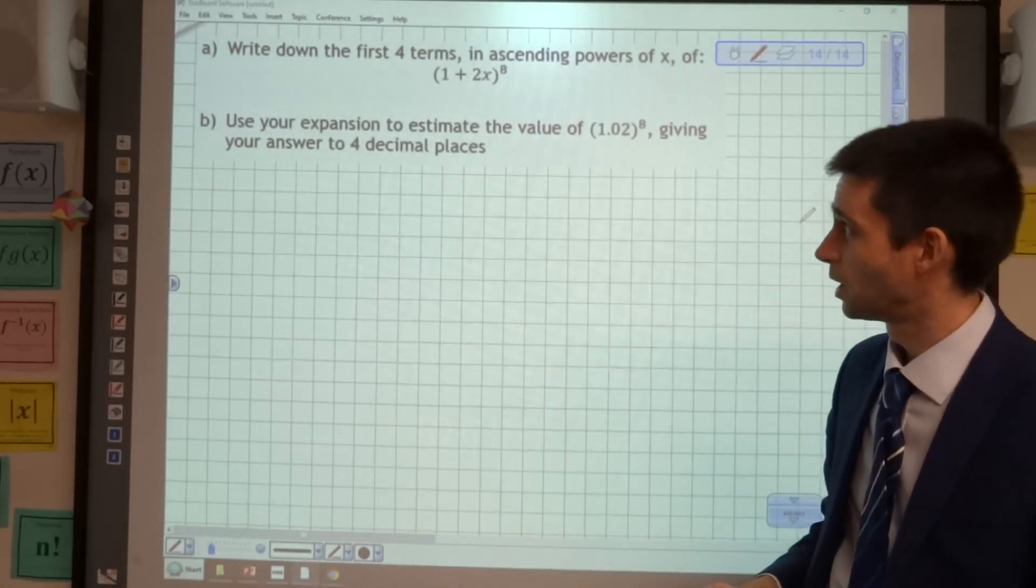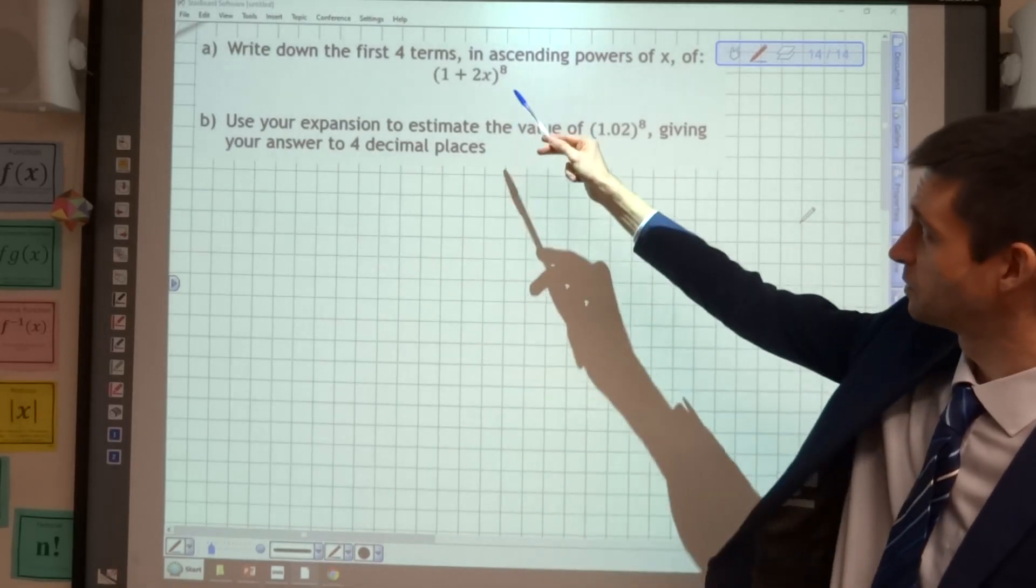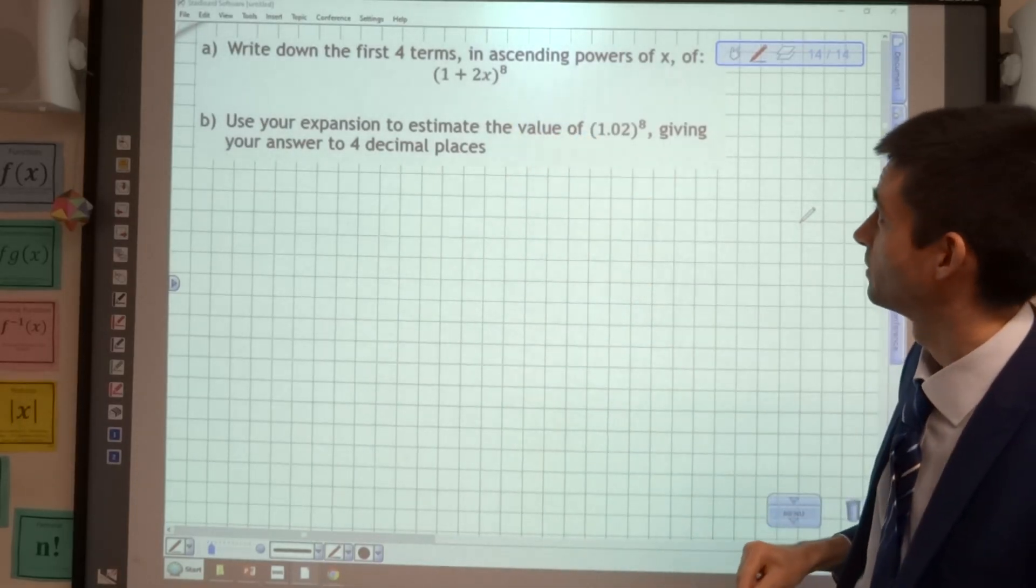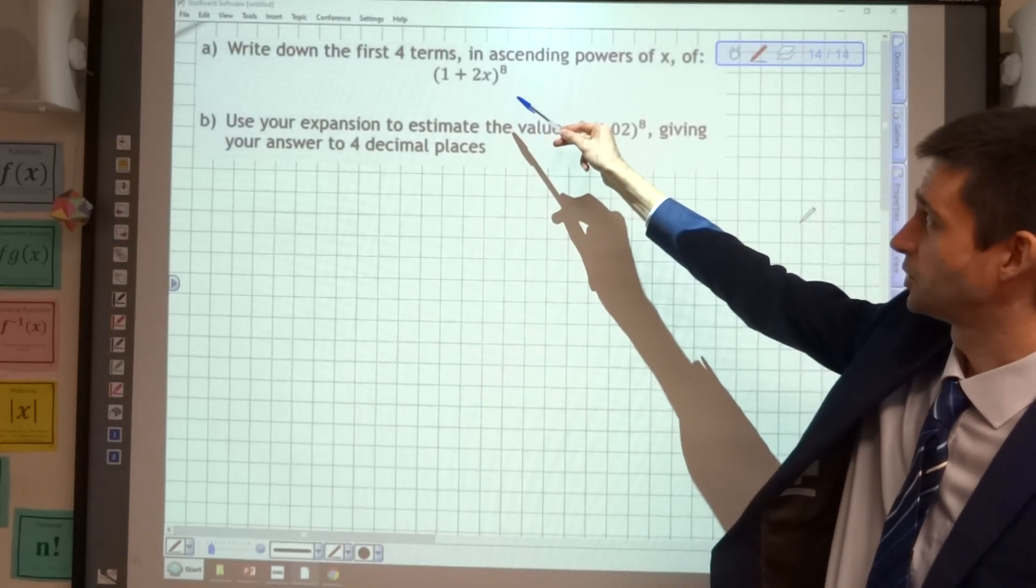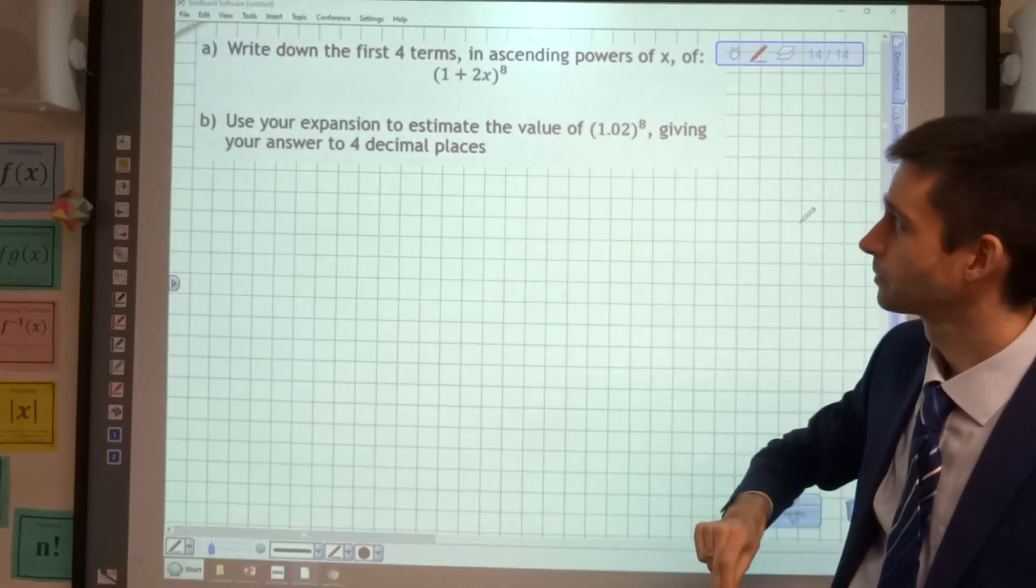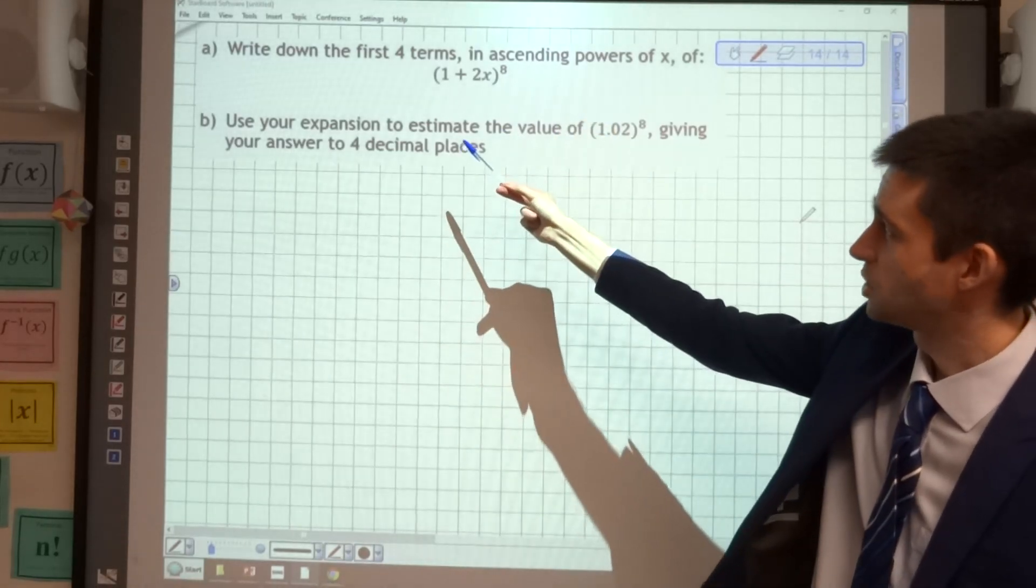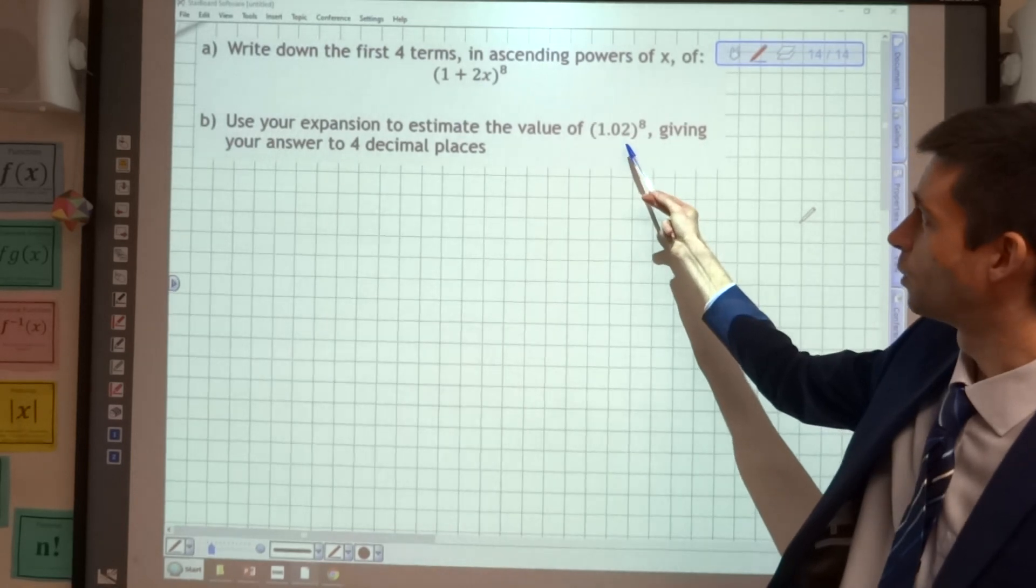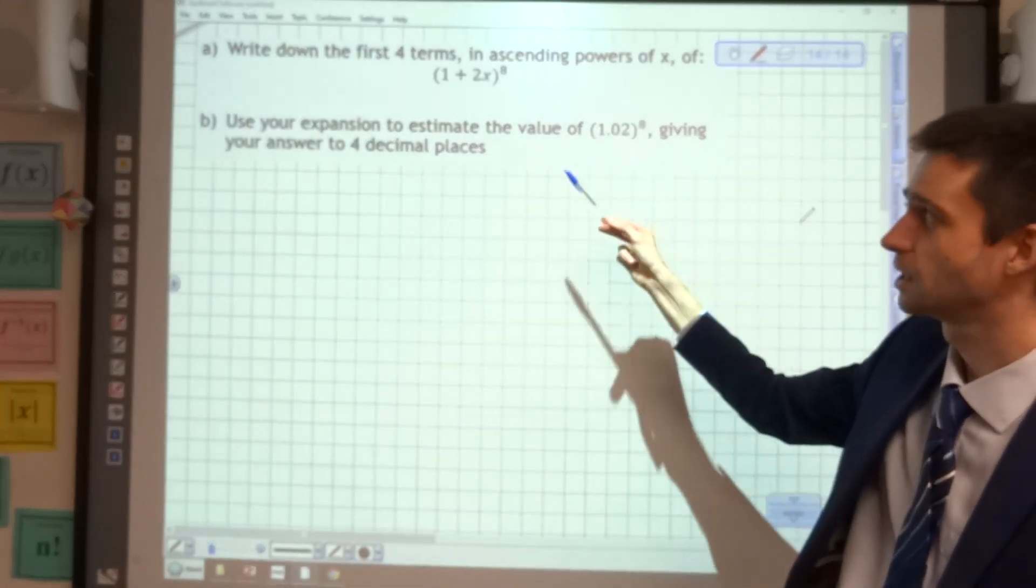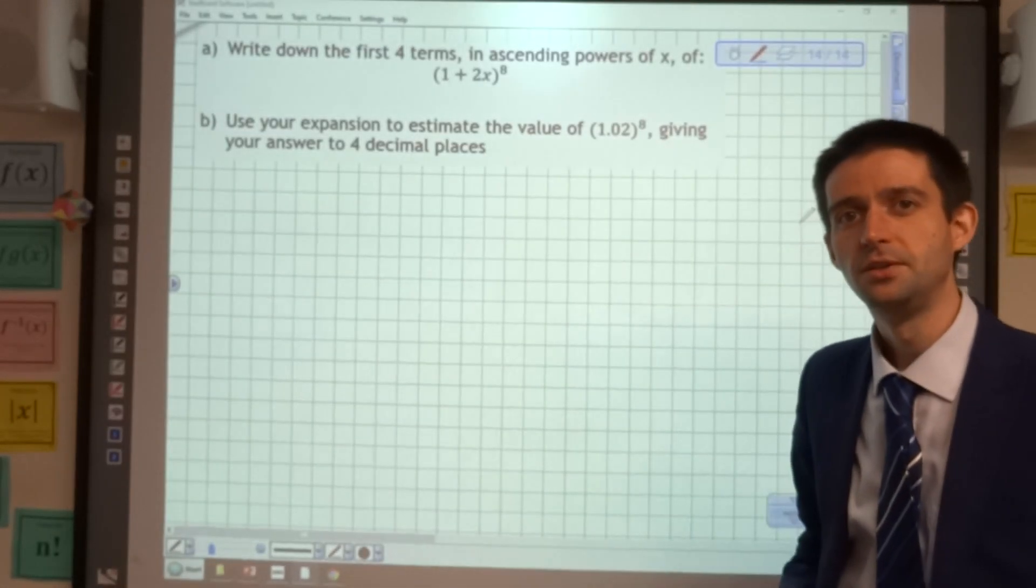So here we have a two-part question. We're being asked to write down the first four terms in ascending powers of x of (1+2x)^8. We're then being asked to use the expansion to estimate the value of (1.02)^8, giving our answer to four decimal places.